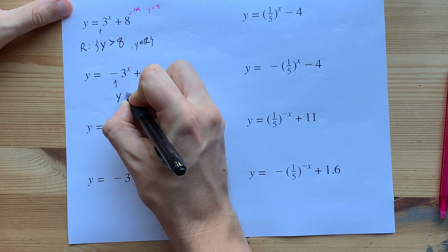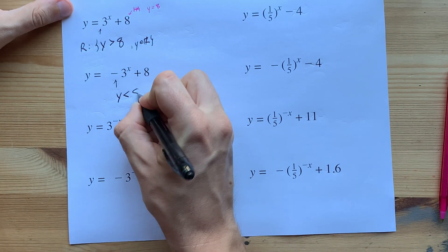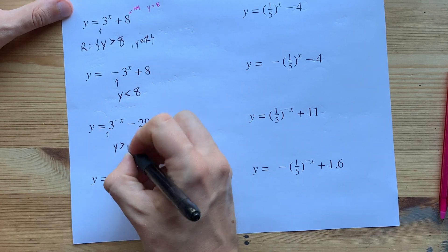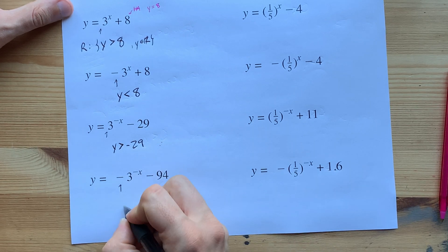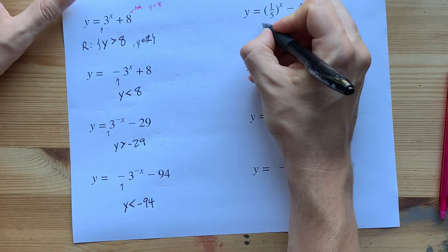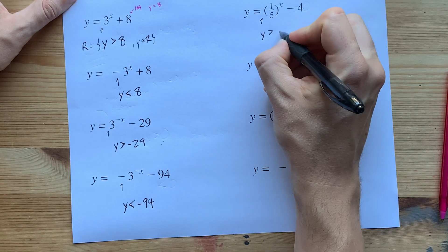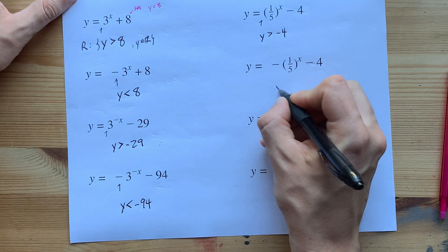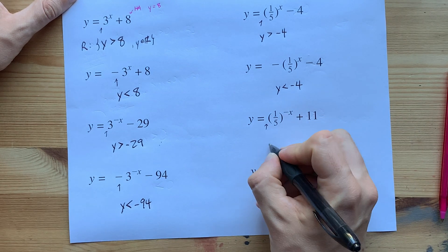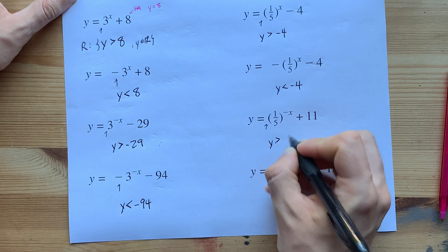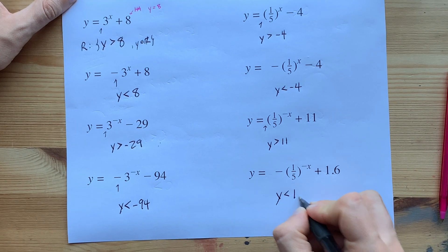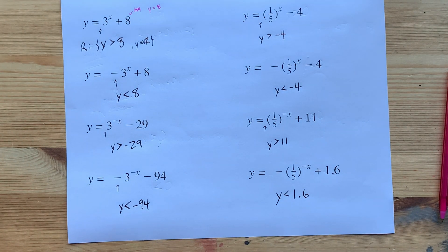Let's keep going. There's a negative out front. Y less than 8. No negative out front. Y greater than negative 29. Negative out front. Y less than negative 94. No negative. Y greater than negative 4. Negative. Y less than negative 4 again. No negative. Y greater than 11. Negative. Y less than? Copy that out. It's positive 1.6. That's it.